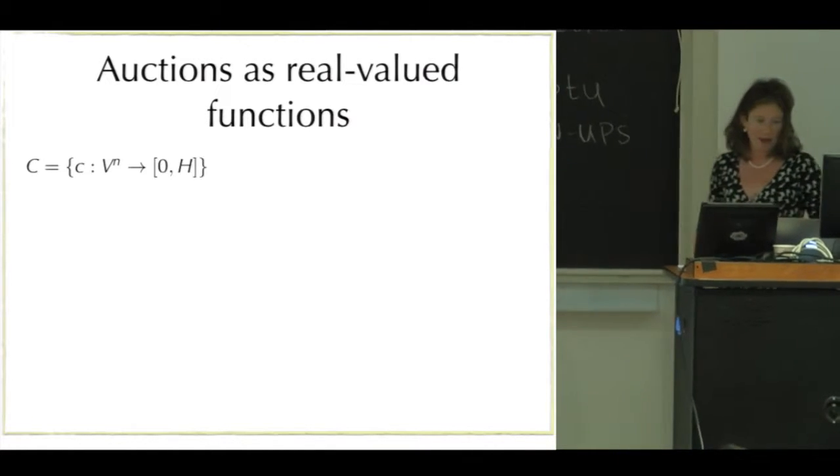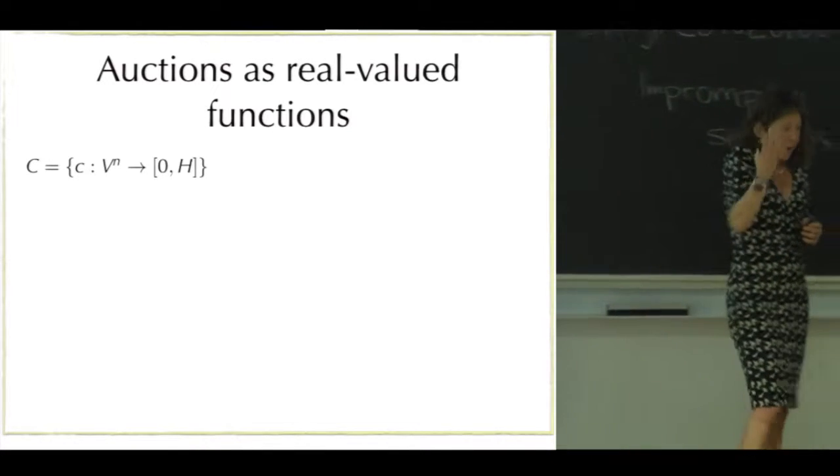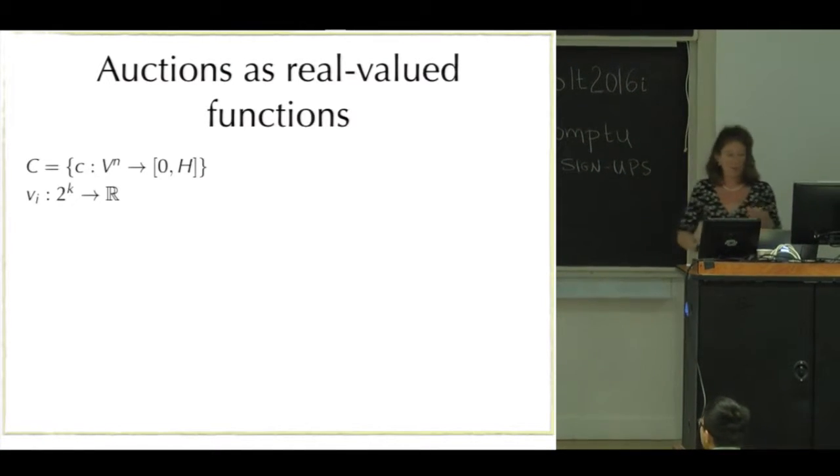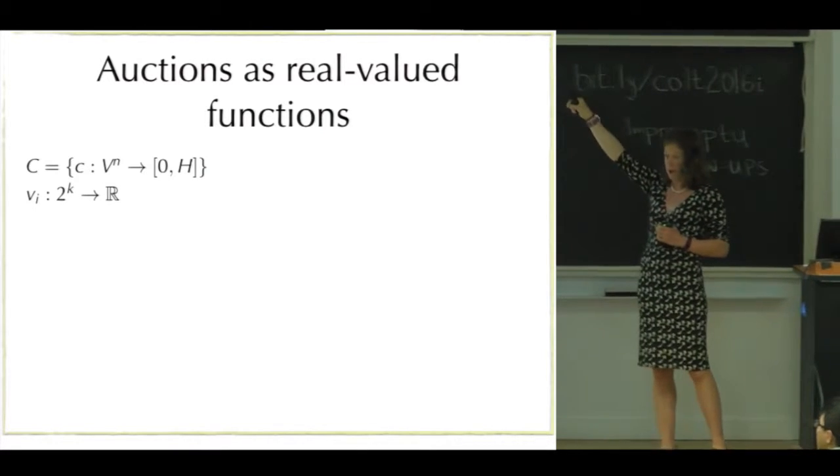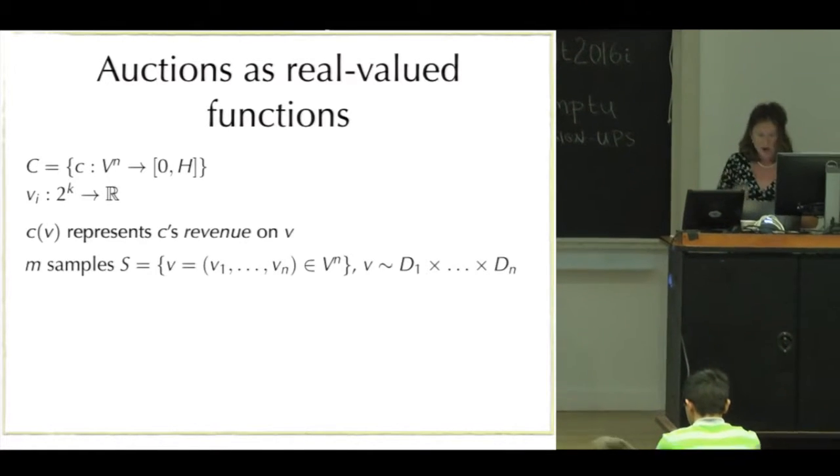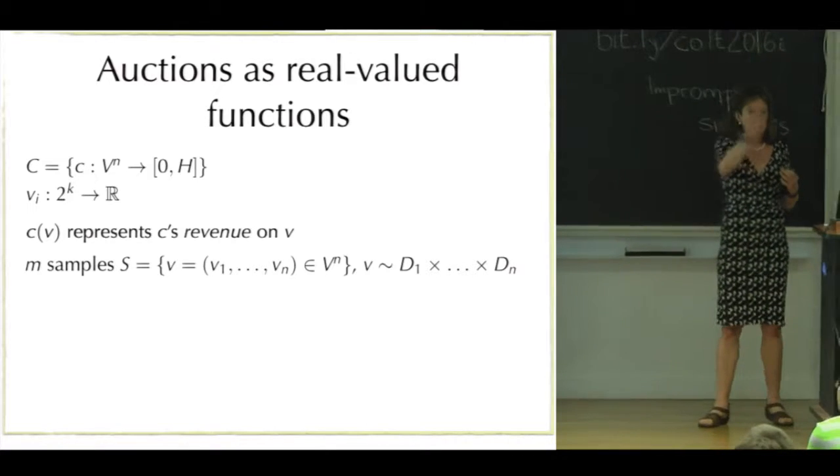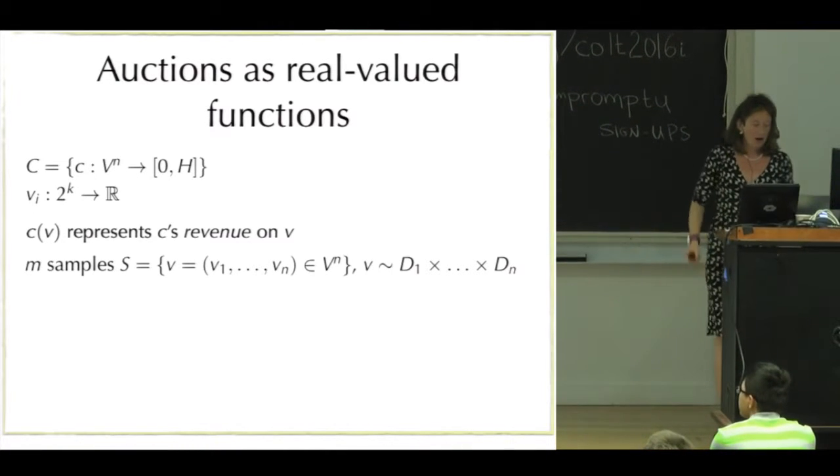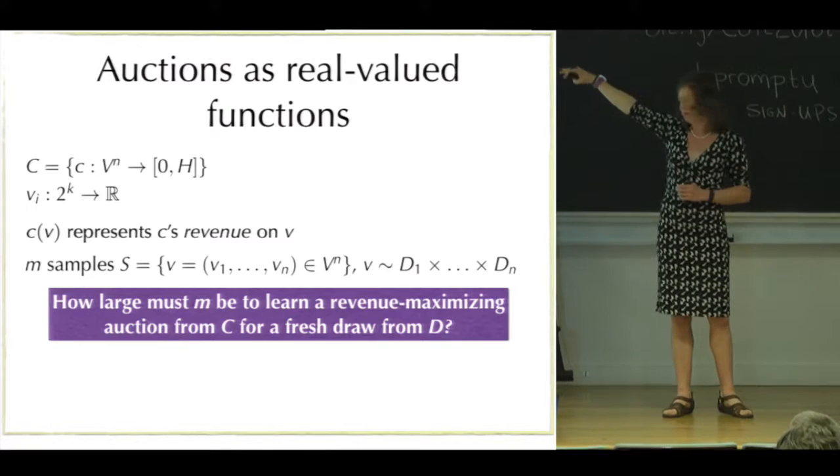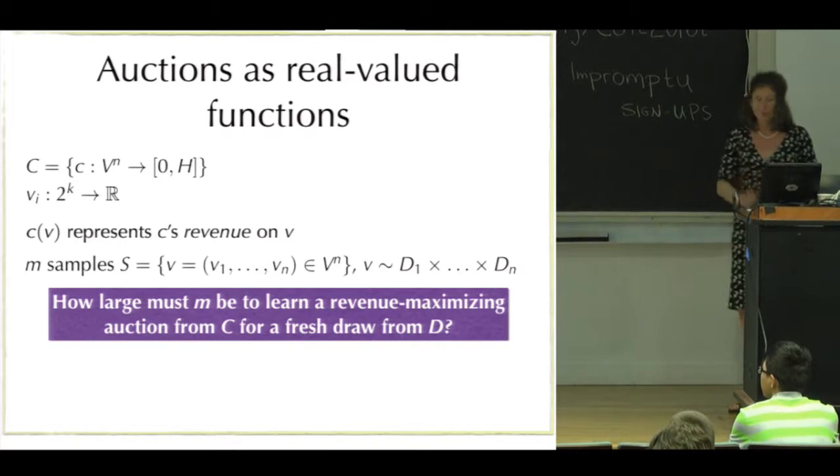As real-valued functions, we can think of auctions as functions from n different valuation functions onto zero to H, where you can think of that as just mapping to the revenue that that auction would actually achieve on those buyers. The setting I want to think about is one where we would have m samples, each sample representing one draw from each of those n distributions. I want to know how large m must be to learn a revenue-maximizing auction from a class of auctions C for a fresh draw from the distribution.